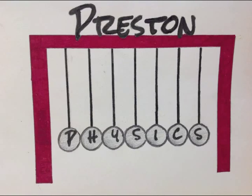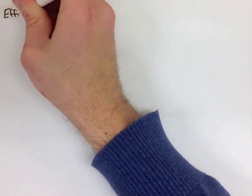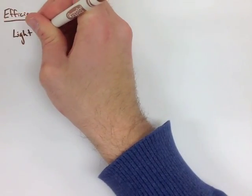Preston Physics, Grade 11, Energy Note 7: Efficiency. When talking about efficiency, we're going to look at general examples. The first thing we're going to look at is a light bulb.